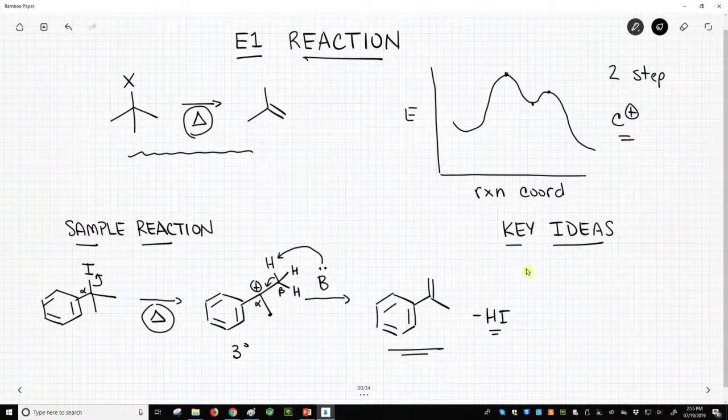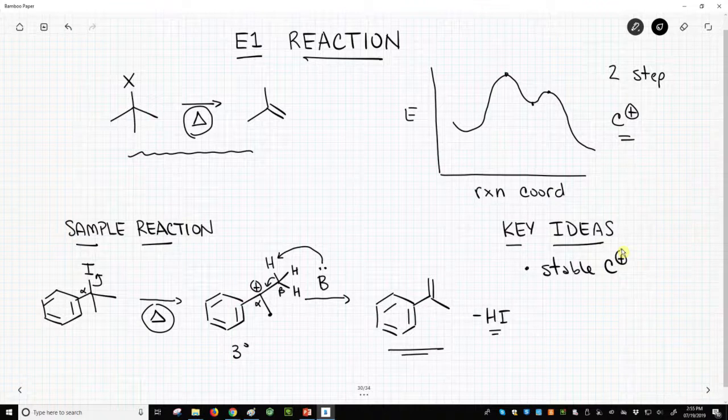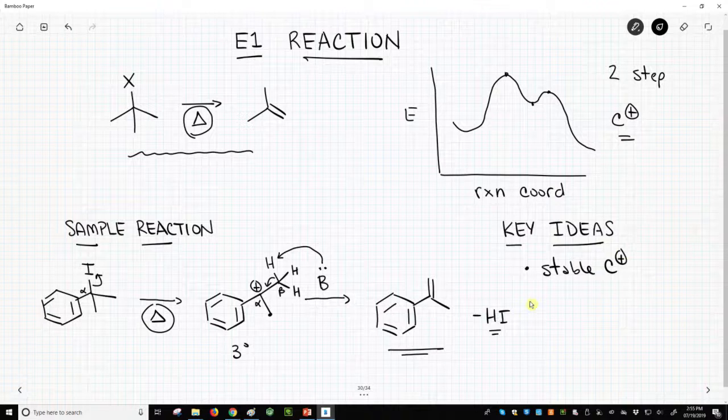So what are our key ideas? Our first key idea is we need a stable carbocation. That means we probably need a highly substituted halide in order to form that stable carbocation.